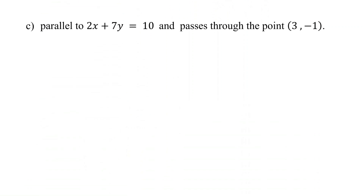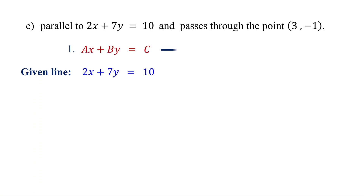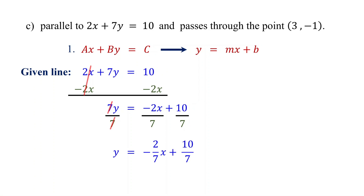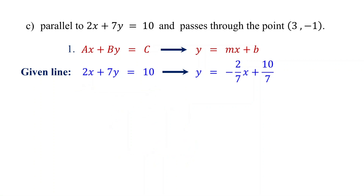In the previous examples, the given line was in slope-intercept form, making it easy to identify the slope directly. In this example, however, the equation is in standard form. In this case, the first step is to convert the standard form to slope-intercept form to identify the slope. Start by moving the x term to the right by subtracting 2x from both sides. On the left, these cancel, leaving 7y. On the right, we get negative 2x plus 10. Then divide both sides by 7 to isolate y. Now the given line is in slope-intercept form.